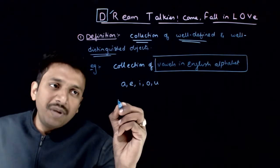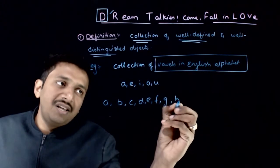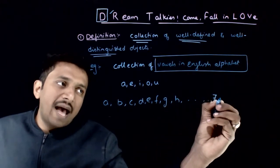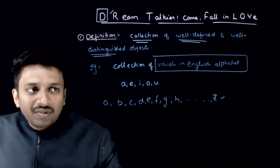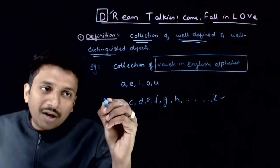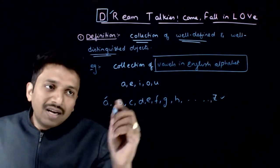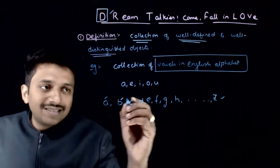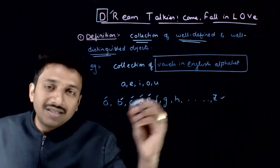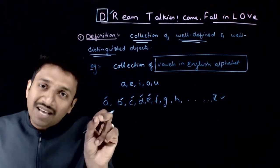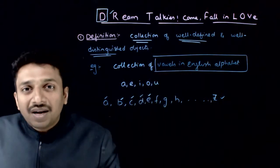Because if I take an object B — you have 26 English alphabets A, B, C, D, E, F, G, H, and so on up to Z. Once I have given this description for the set, you should be very clear: does A belong to this collection? Yes, because A is a vowel. Does B belong to this set? No. Does C belong? No. Does D belong? No. Does E belong? Yes. The answer has to be either yes or no — there should not be any ambiguity. Such collections are called well-defined collections.